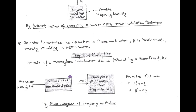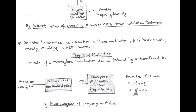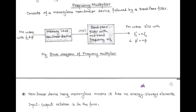The frequency multiplier basically consists of a memoryless non-linear device followed by a band pass filter. This band pass filter has a mid-band frequency of n times Fc. The input of the frequency multiplier is the narrow band FM wave, having a modulation index β and carrier or center frequency Fc. The output of the memoryless non-linear device is v(t), and after passing through the band pass filter, we get a wide band FM denoted by s'(t), having carrier frequency Fc' and modulation index β', both being N times those of the narrow band FM.